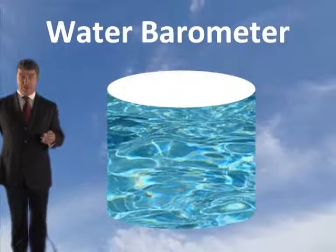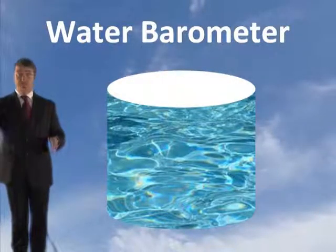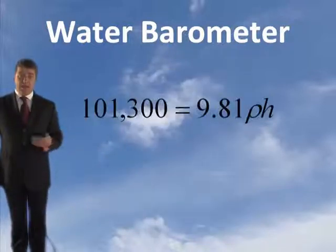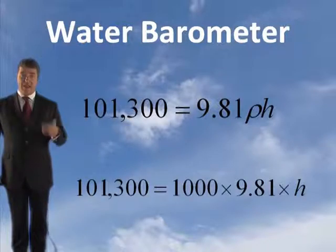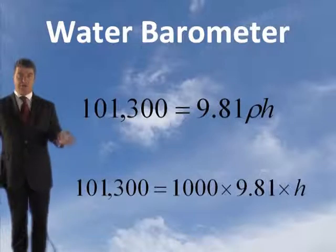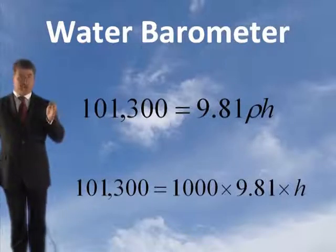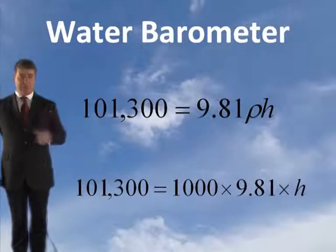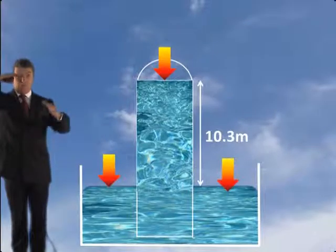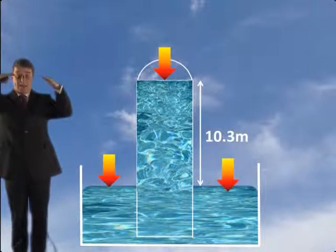How high would the column of water have to be if we had a water barometer? Using the formula, atmospheric pressure is 101,300 Pa and the density of water is 1,000 kg/m³, so 101,300 = 1,000 × 9.81 × H. Transposing, that comes out at 10.3 metres. So one atmosphere is equivalent to 10.3 metres of water.